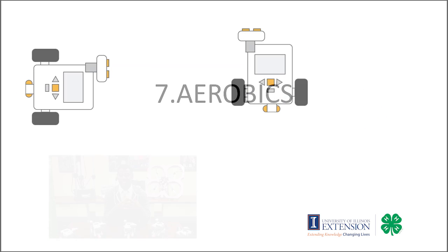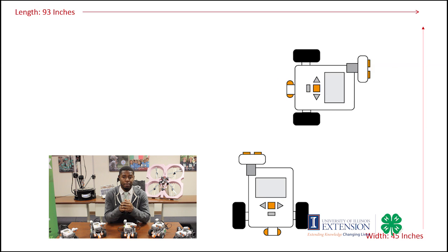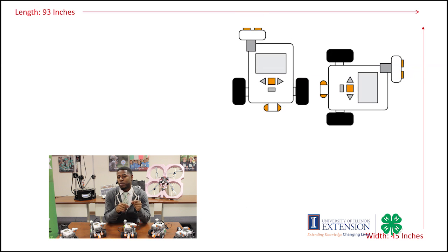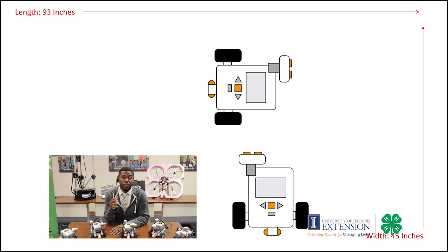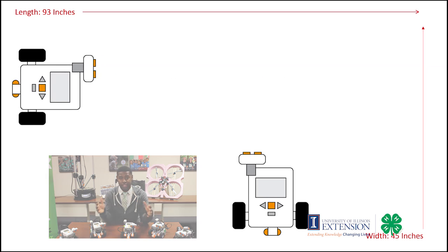Aerobics. In this task, your health bot will jog either the length and or the width of the table. Robots must contact the walls at each end of the run. Points will be awarded if the robot can jog the width of the table, with more points being awarded if the robot can jog the length of the table.